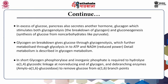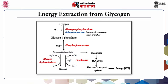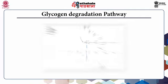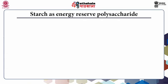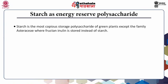In this slide we look at the energy extraction from glycogen. Glycogen is acted upon by glycogen phosphorylase to give glucose-1-phosphate, upon which phosphoglucomutase acts to form glucose-6-phosphate, which forms glucose. It is then acted upon by hexokinase and goes into the TCA cycle via glycolysis, followed by the electron transport system, to give rise to energy in the form of ATP. This slide also shows the glycogen degradation pathway and how glycogen is degraded via various debranching enzymes.